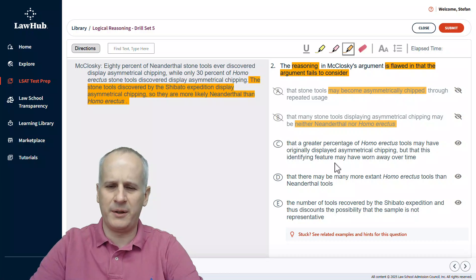Then, choice C. That a greater percentage of Homo erectus tools may have originally displayed asymmetrical chipping, but that this identifying feature may have worn away over time. Well, again, a greater percentage needs more specificity. It's too vague.